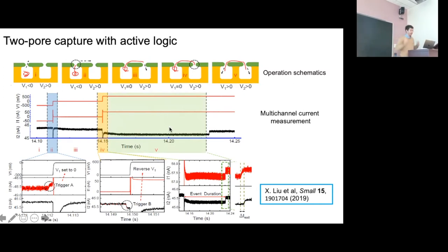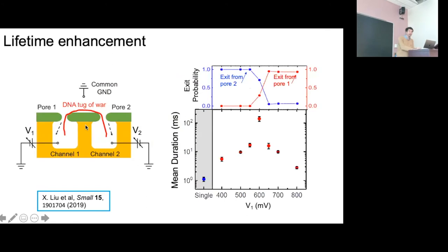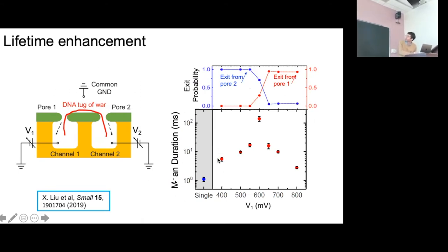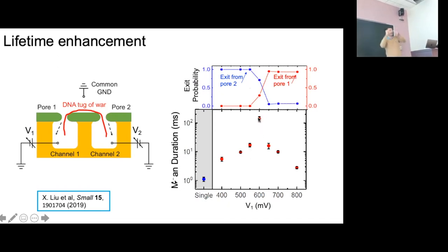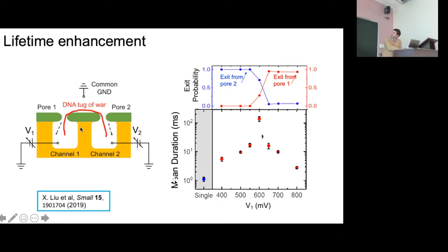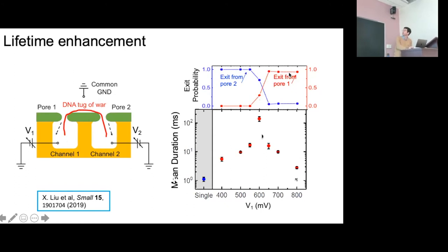With this tug-of-war state, we keep the voltage at pore two fixed at 500 millivolts and vary the voltage at pore one. We look at the mean duration of the tug-of-war states: when pore one voltage is low, the DNA moves from pore one to pore two. As pore one voltage approaches 500 mV, the translocation slows dramatically, then as it grows past, there's a fall-off and the DNA moves from pore two to pore one. We can prove this by exit probability — 100% exit from pore two on one side, 100% from pore one on the other.